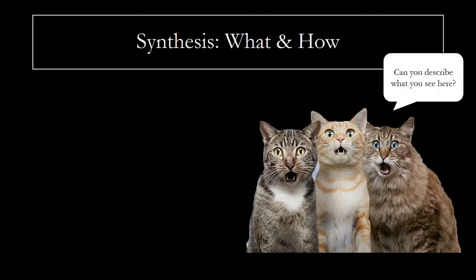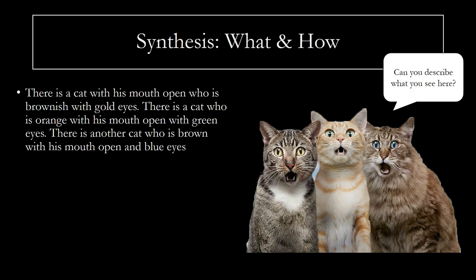Let's say that I ask you to describe what you see in this image, and you tell me this: there is a cat with his mouth open who is brownish with gold eyes; there is a cat who is orange with his mouth open with green eyes; there is another cat who is brown with his mouth open and blue eyes. Often this is the way that students want to present data in the results section — listing their sources one at a time and commenting on each one individually. But this is not a strong method. You can tell how inefficient this approach is and even slightly confusing; a reader would have a hard time picturing it — it's too disconnected and reads too much like a list.